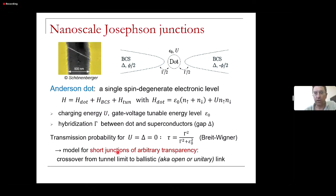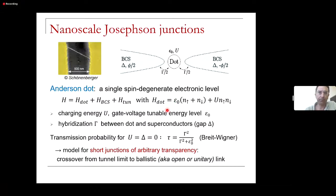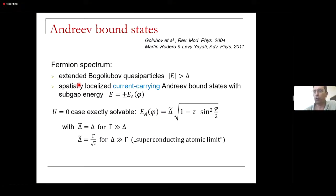If you look at the spectrum for this type of setup, you find two types of electronic states. There are extended or bulk quasi-particles that live at energies above the gap. Below the gap, inside the gap, there can be bound states — the so-called Andreev bound states. The sub-gap energy always comes symmetric around zero at plus or minus E_A of phi. They depend on the phase difference, and for that reason they carry current. These bound states live close to the junction, decaying exponentially into the superconductors.